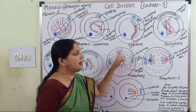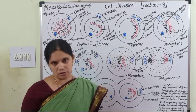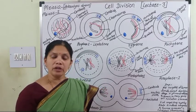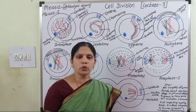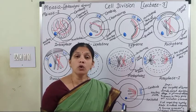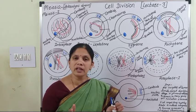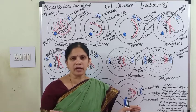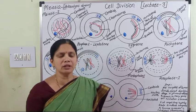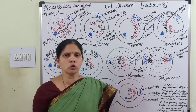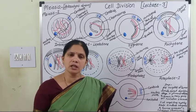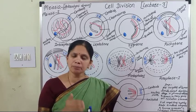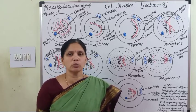After the leptotene stage, the cell enters the zygotene stage. In zygotene, the homologous chromosomes lie near to each other. For example, in human beings there are 46 chromosomes per cell — 23 paternal chromosomes from the father and 23 maternal chromosomes from the mother.